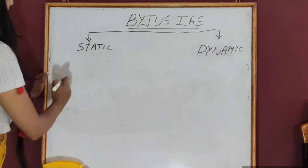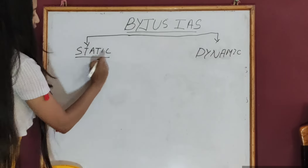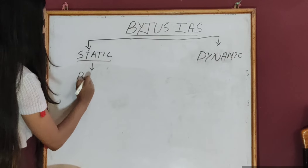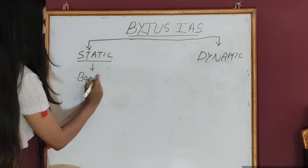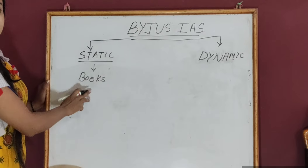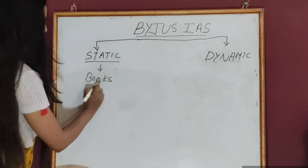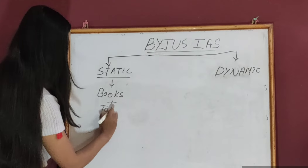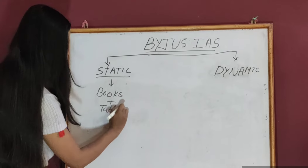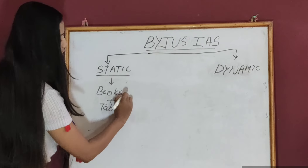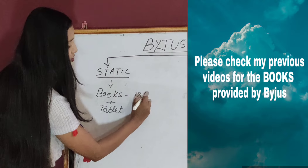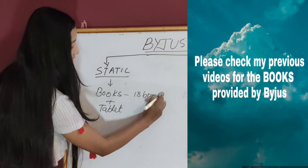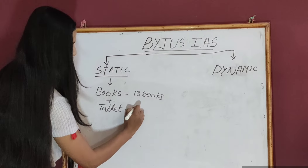Under the static portion we have the books that are provided by Byju's and the tablet. We have 18 books altogether and one tablet.